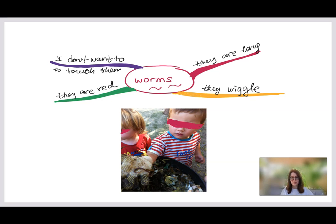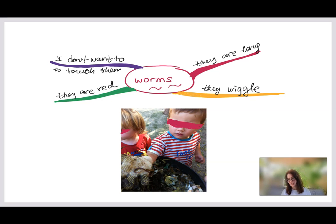In one group there was a strong interest in wiggly worms, so I set up a worm farm and we explored how they live and what they do — observing them closely. Afterward I used mind mapping to document children's initial ideas and prior knowledge about worms. Some children said they are long, they wiggle, they are red, and 'I don't want to touch them.' This is a very authentic type of documentation you can attach to your project, and revisit as children learn more.